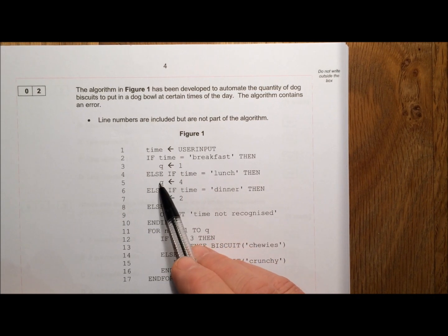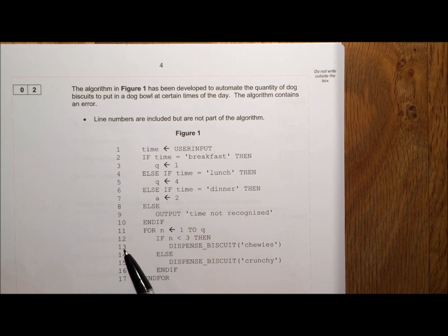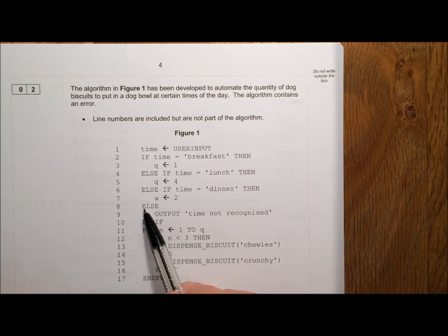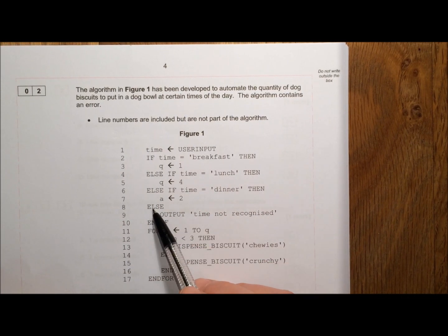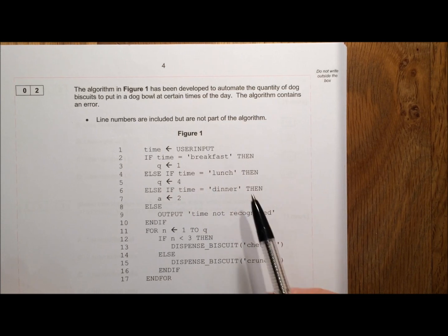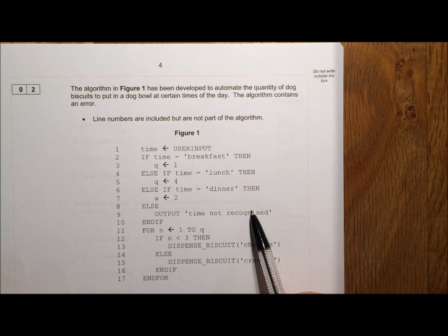Before, we've been setting Q to be a number and suddenly this A has appeared. I wonder what that could be. Else, so in other words, if none of those things happen, then we output time not recognized. So if the person doesn't enter breakfast, lunch or dinner, it'll give us this message here.